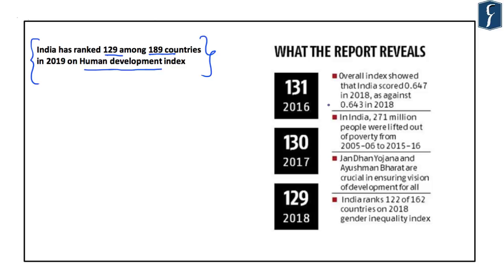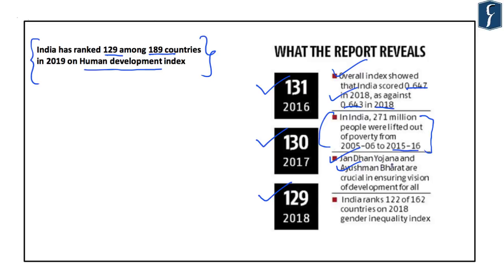In 2016 India ranked at 131, then improved to 130, and then to 129. India scored 0.647 in 2018 against 0.643 in 2017. Further, 271 million people were lifted out of poverty from 2005-06 to 2015-16, with the biggest contributions from the Jan Dhan Yojana and the Ayushman Bharat Yojana. On the Gender Inequality Index, India ranks at 122 out of 162 countries in 2018.